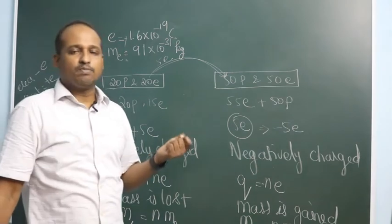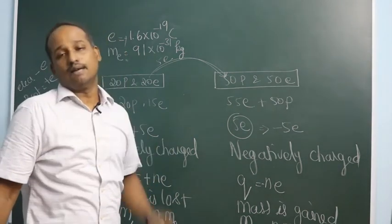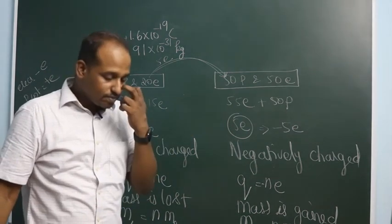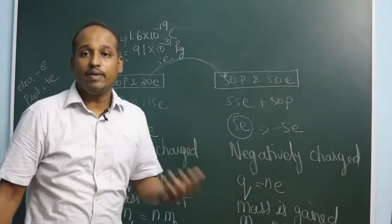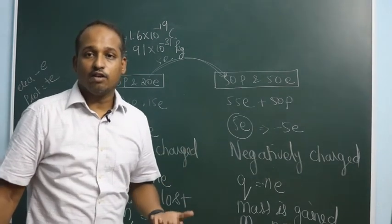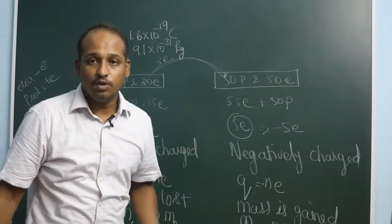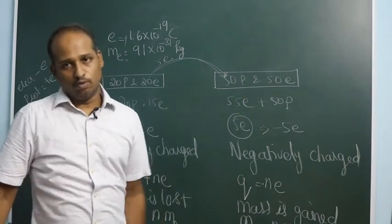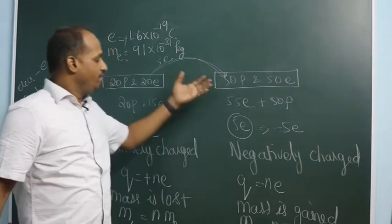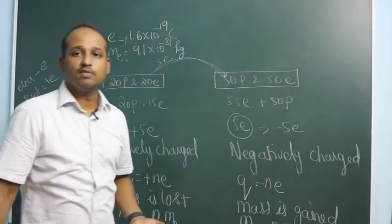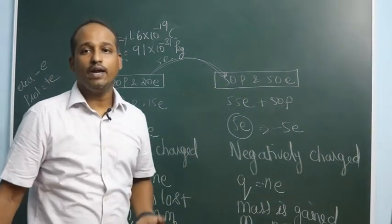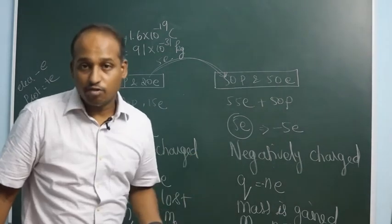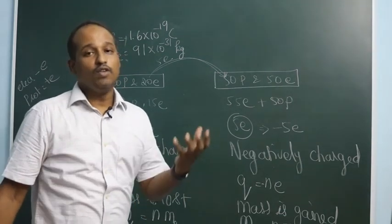Although the electron mass seems very tiny, it does matter. If you work out how many electrons constitute 1 coulomb, the answer is 6.25 × 10¹⁸ electrons — these electrons together produce a charge of −1 coulomb.